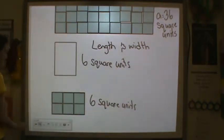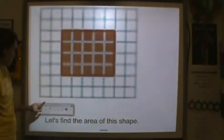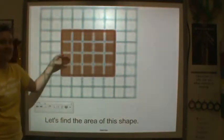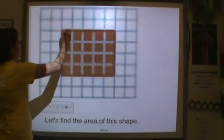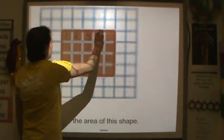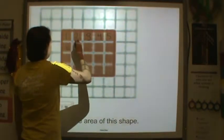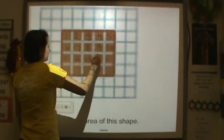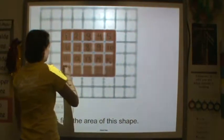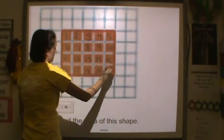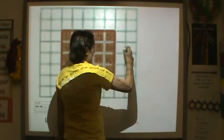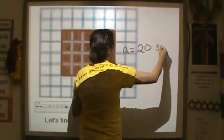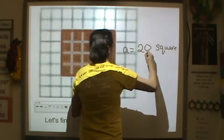Now let's find the area of this shape. So all we have to do is figure out how many square units are in the inside of this shape. So let's count 1, 2, 3, 4, 5, 6, 7, 8, 9, 10, 11, 12, 13, 14, 15, 16, 17, 18, 19, 20. So the area is equal to 20 little squares, square units.